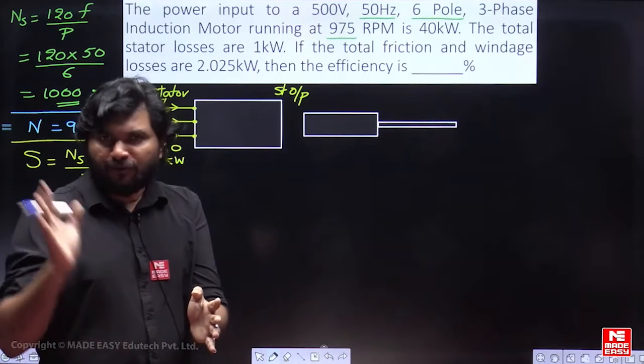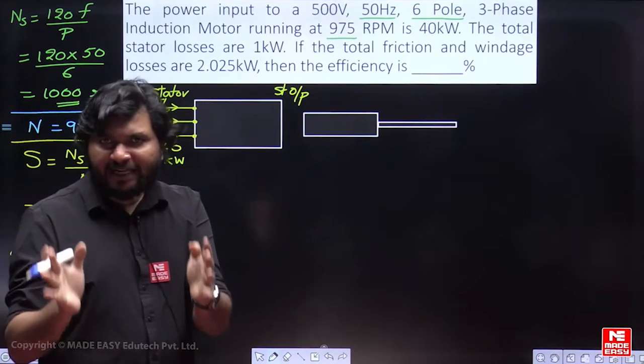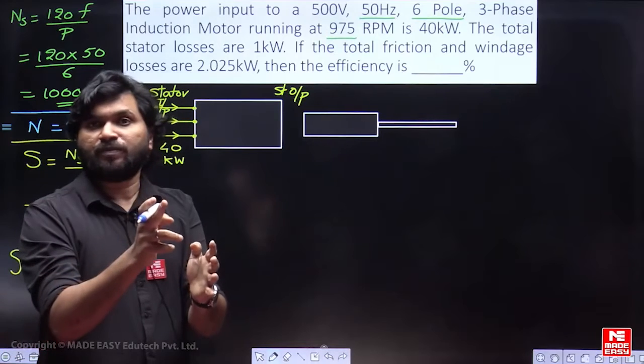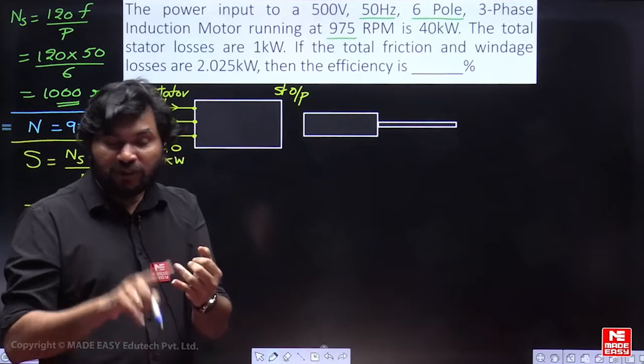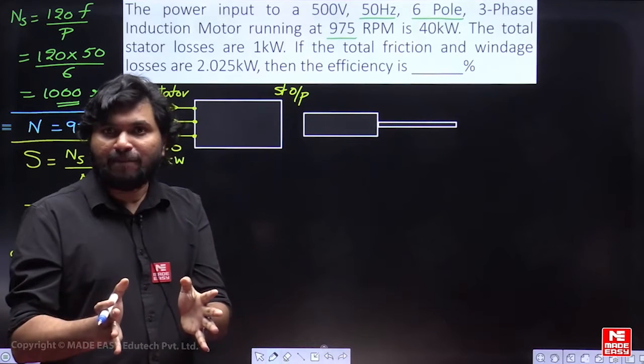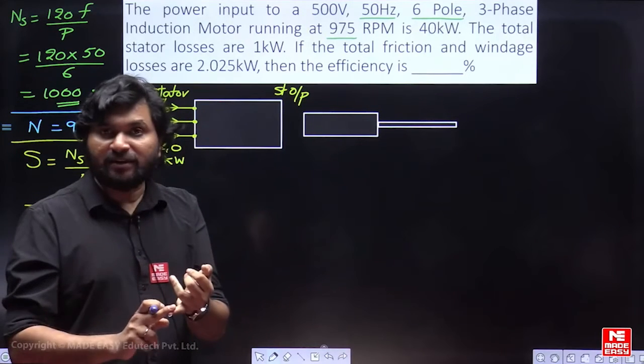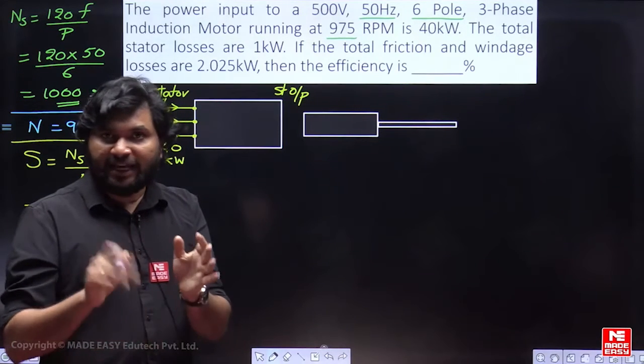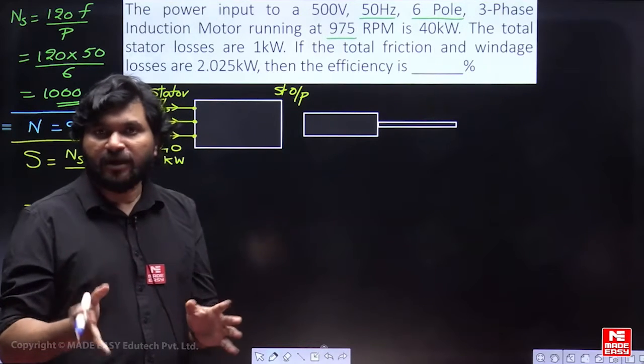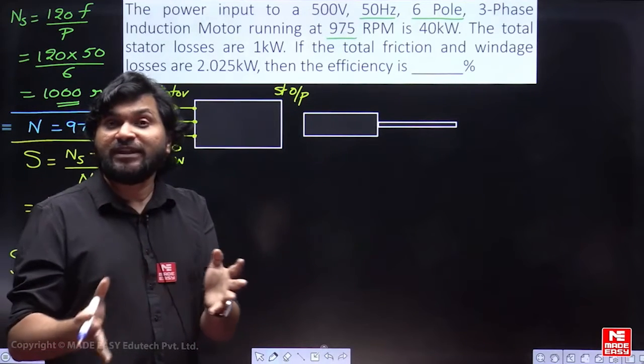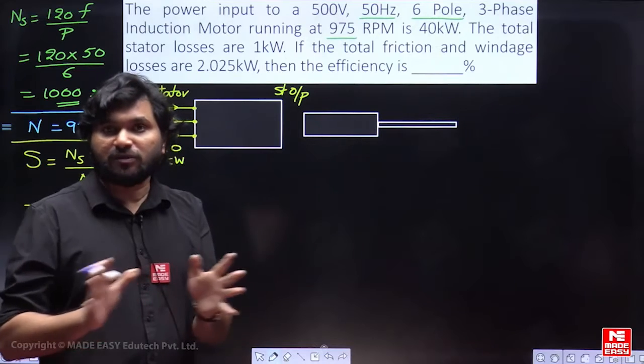In a transformer, from primary to secondary, magnetic field transfers through core. In the core, there will be eddy currents, there will be hysteresis. But in the air gap, there is no eddy current, there is no hysteresis. In the air, no chance of current circulating, and in the air, no retentivity property, no hysteresis property.